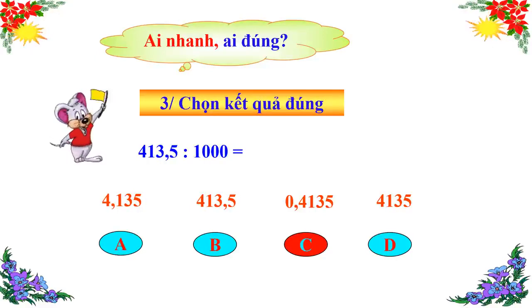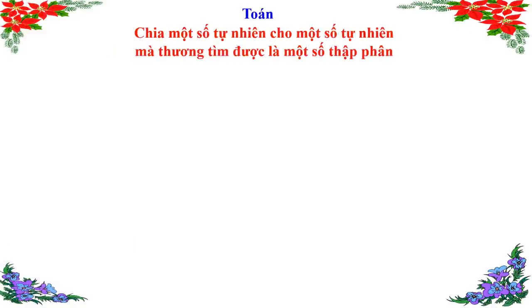Bây giờ thầy trò chúng ta cùng bắt đầu vào bài học mới. Hôm nay chúng ta sẽ học bài: Chia một số tự nhiên cho một số tự nhiên mà thương tìm được là một số thập phân. Ở lớp 4, các bạn đã học chia một số tự nhiên cho một số tự nhiên mà thương là một số tự nhiên. Thầy và các bạn sẽ đi tìm hiểu ví dụ số 1.